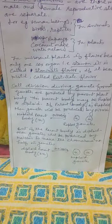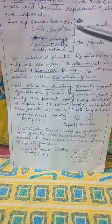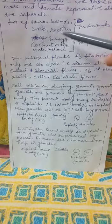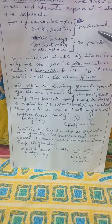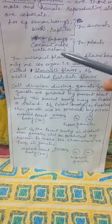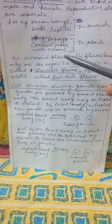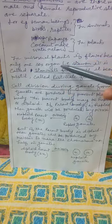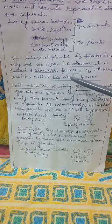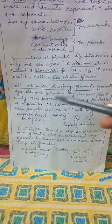Unisexual organisms are those in which male and female reproductive structures are separate. Examples from animals include human beings and birds, while examples from plants include papaya, coconut, maize, and watermelon. In unisexual plants, if the flower bears only the stamen it is called a staminate flower, and if it bears only the pistil it is called a pistillate flower.